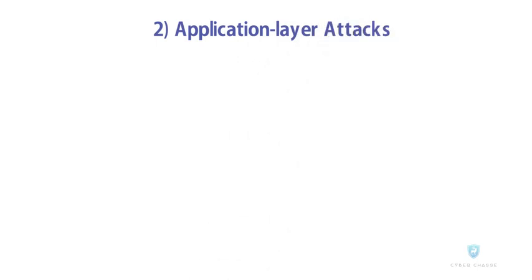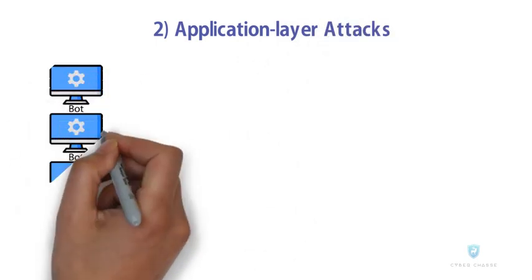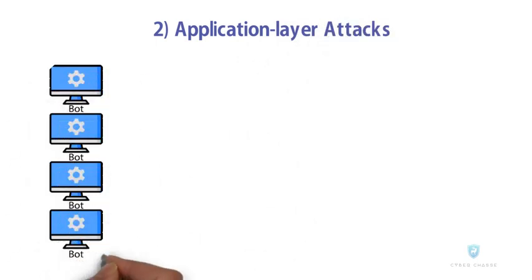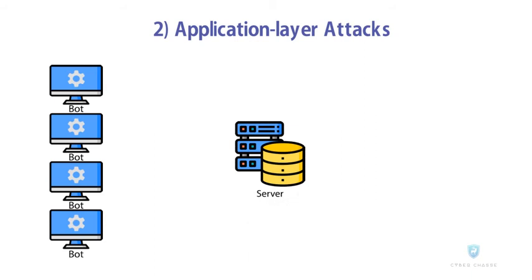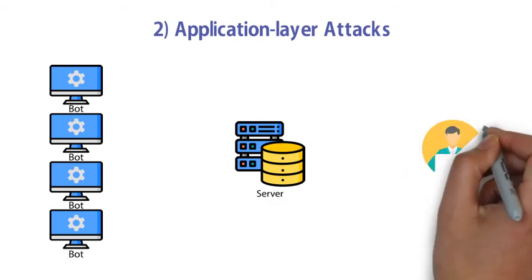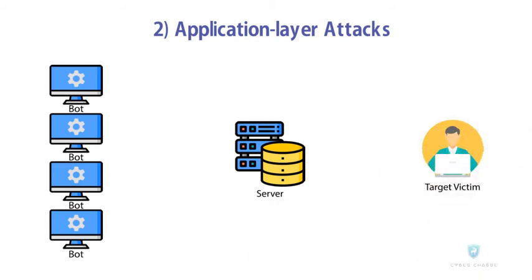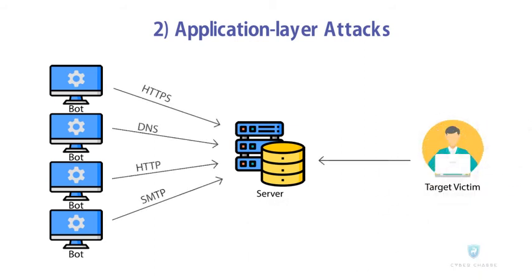Second, Application Layer Attacks: the applications that users interact with are targeted to attack web traffic directly by striking the HTTPS, HTTP, DNS, and SMTP protocols. This type of attack is usually hard to troubleshoot.